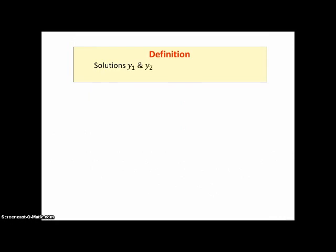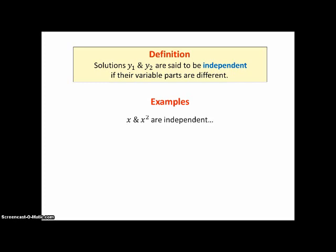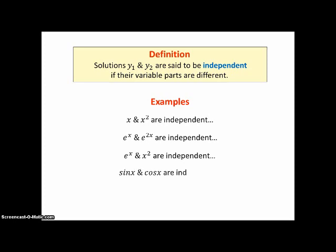Definition: Solutions y1 and y2 are said to be independent if their variable parts are different. For example, x and x² are independent. e to the x and e to the 2x are independent. e to the x and x² are independent. Sine x and cosine x are independent. But 5x³ and 12x³ are not independent — even though the coefficients differ, the variable parts are identical.